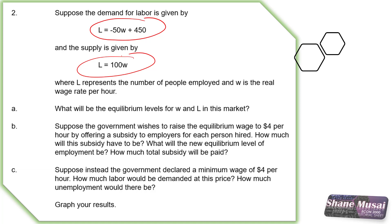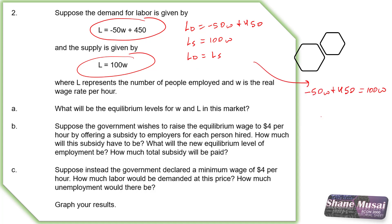To get the equilibrium level, we just set demand equal to supply. So we set labor demanded — which is equal to negative 50W plus 450 — equal to labor supply, which is equal to 100W. This gives us 150W equals 450, and dividing both sides by 150, we get the equilibrium wage is $3. Substituting back into either formula, the equilibrium labor in the market is 100 times 3, which equals 300. That answers Part A.